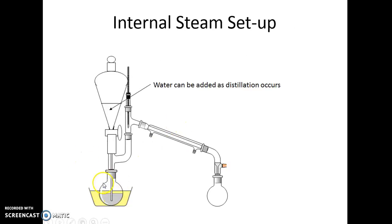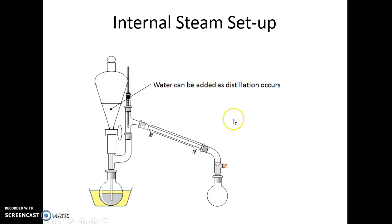Here's a picture of the setup. You've got your round bottom flask. Here is your addition funnel, which adds water to the system. You use a Claisen head to hold the addition funnel and the rest of the distillation apparatus, then there's the still head, the thermometer and thermometer adapter, the condenser, the vacuum adapter, and then the round bottom. It looks very similar to simple distillation — it just has an addition funnel added so you can add water while distillation is ongoing.